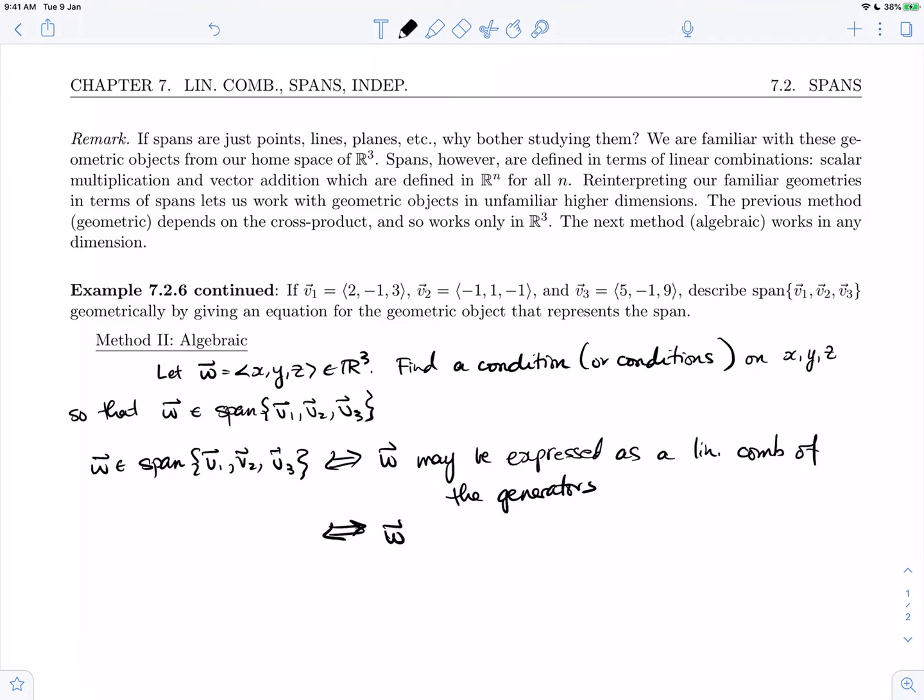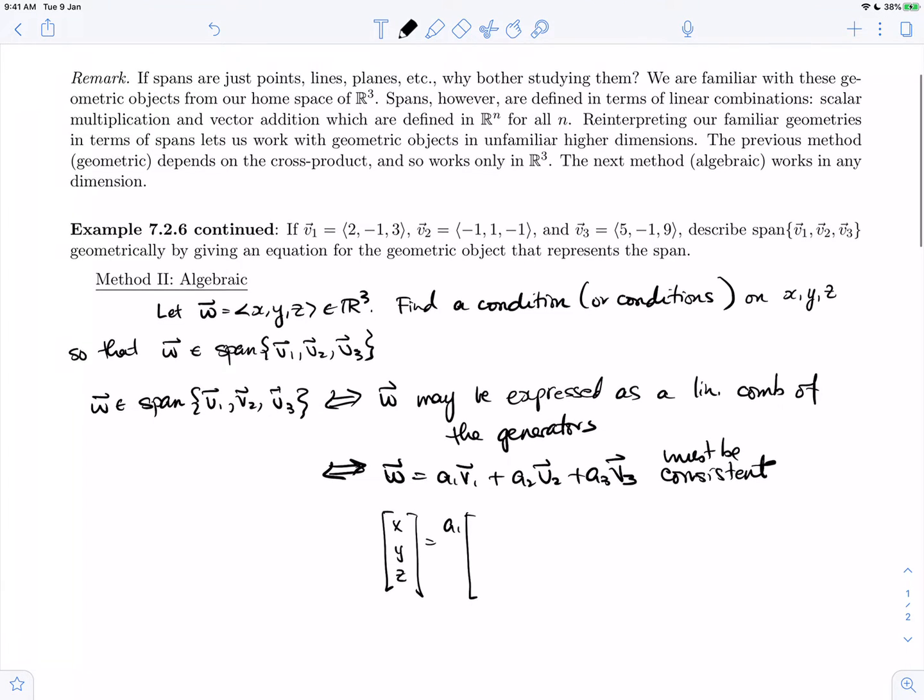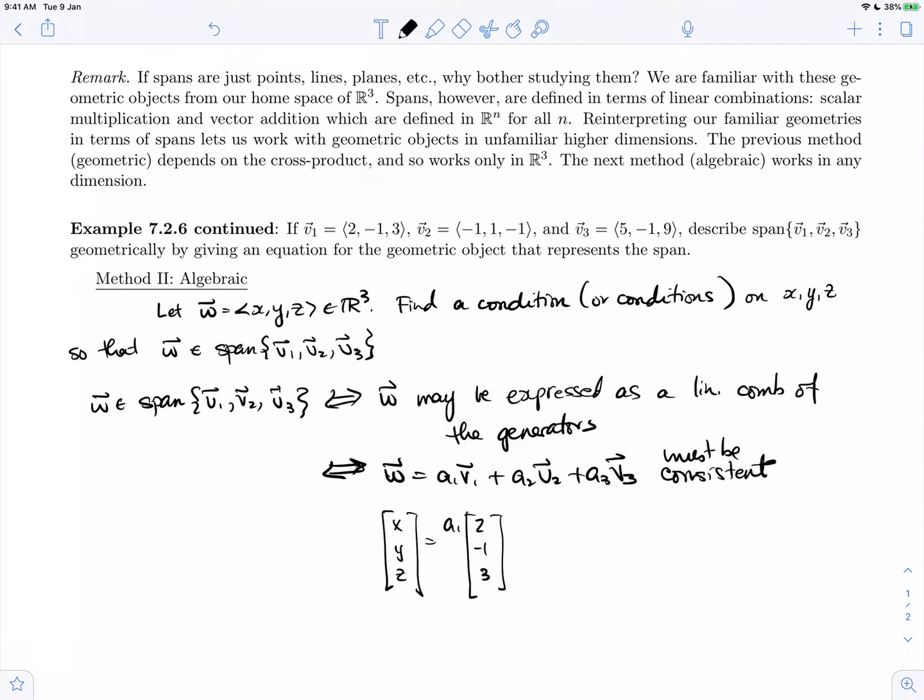Which means that w is a1 v1 plus a2 v2 plus a3 v3. This vector equation must be consistent. This vector equation, we know, if we write in the components of each of these vectors, we can transform this vector equation into an equivalent linear system. So a1 v1 plus a2 times v2 plus a3 times v3.